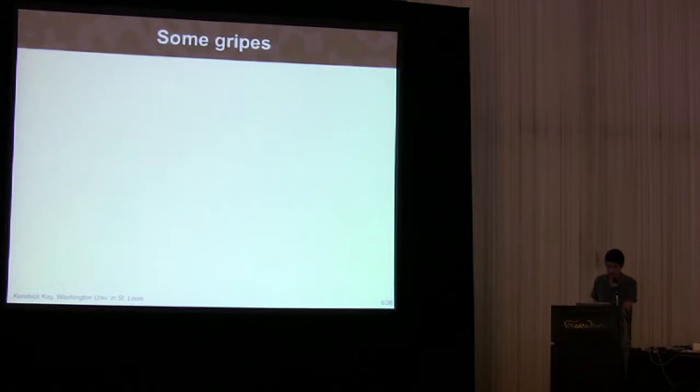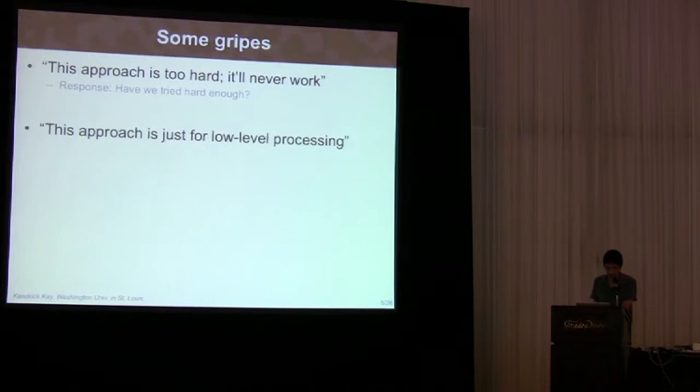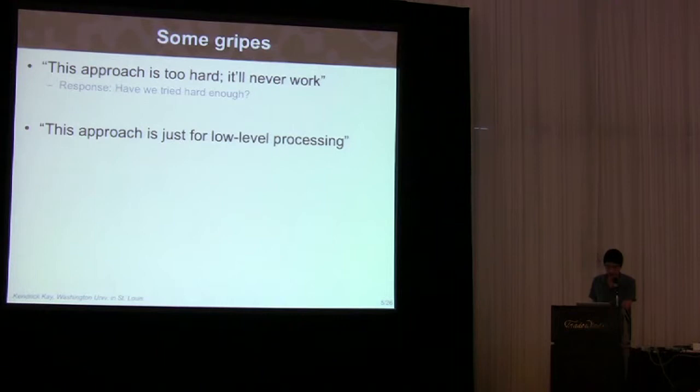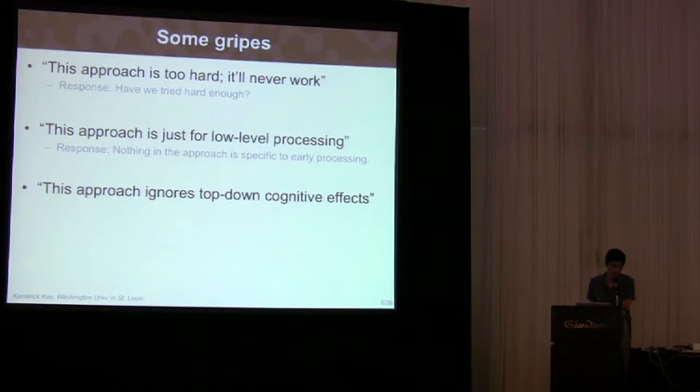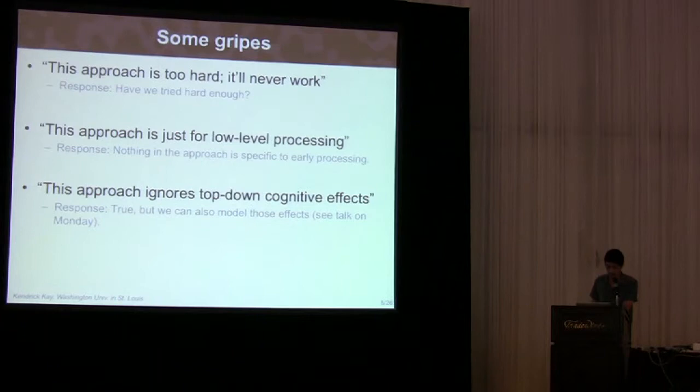Now, for the skeptics in the audience, you may think this approach is too hard and that it'll never fully work for the visual system. I have no good response other than the question whether we've actually tried hard enough. You might think, alternatively, that this approach is okay, but it's only going to work for quote-unquote low-level processing. Or you might use the term bottom-up or feed-forward. I'm not sure where this sentiment comes from, since there's nothing in how the approach is laid out that makes it specific to what you might say is quote-unquote low-level. And finally, you might think this approach is limited because it ignores top-down cognitive processes, which Thomas actually mentioned. I completely agree with this, but I think it's also possible to model those top-down effects.